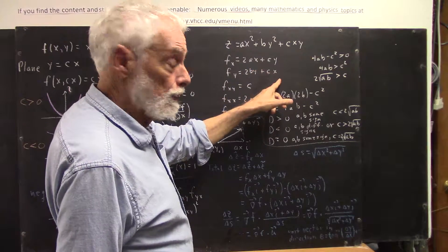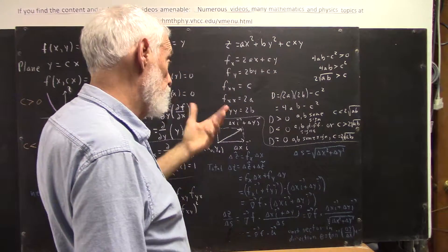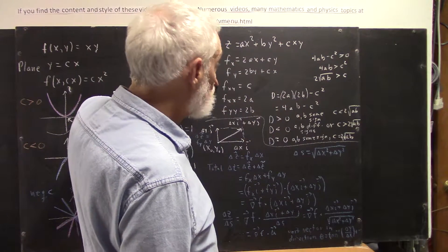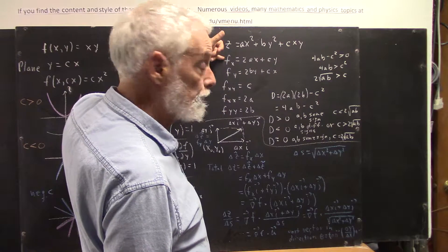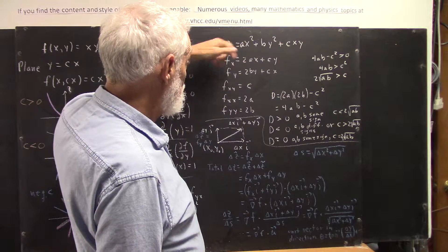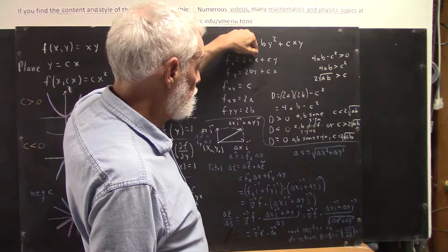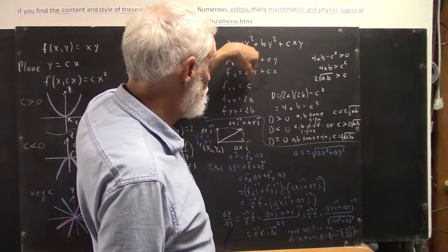And the y-derivative is going to be 2by plus cx, and I just did read it to you. The xy-derivative, if we take the y-derivative of the x-derivative, the y-derivative of 2ax is going to be 0, the y-derivative of cy is just c.